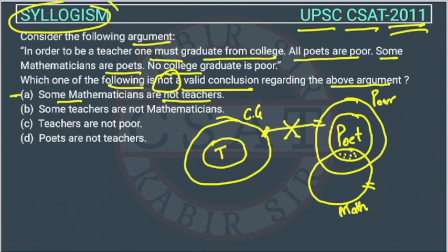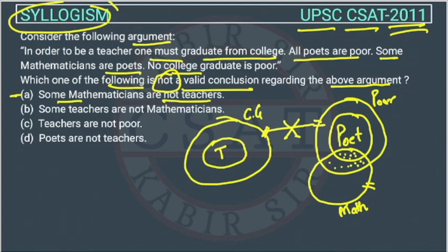The mathematicians are going inside the poor and poet circles. This area crossing with poor and poet — these mathematicians are not teachers. We are sure about it because there is no relationship between college graduate and poor. So this conclusion is correct, but it cannot be the answer since we have to find the wrong one.